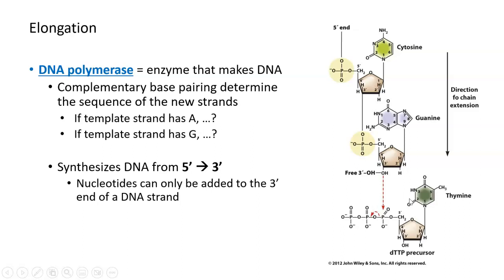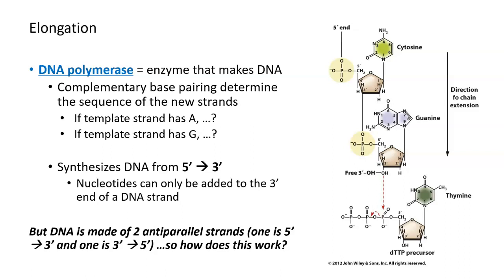We know that DNA is made up of two antiparallel strands, which means one strand is oriented 5' to 3', but the other is oriented 3' to 5'. If we need to use these two different antiparallel strands as templates to make DNA, but the DNA polymerase enzyme only moves in one direction, we're going to have to solve this problem of how DNA polymerase can synthesize DNA from templates oriented in opposite directions.